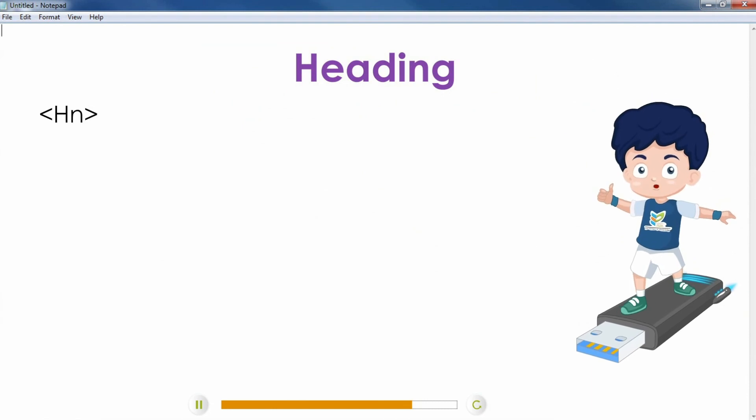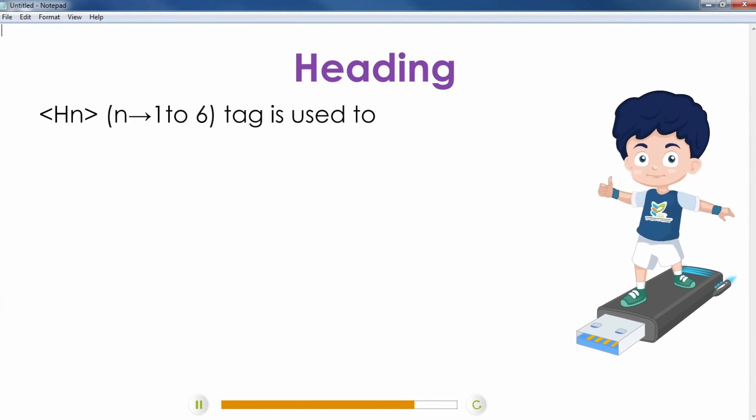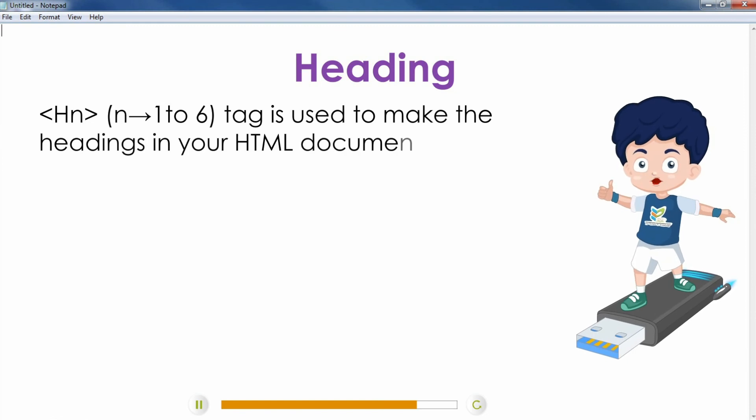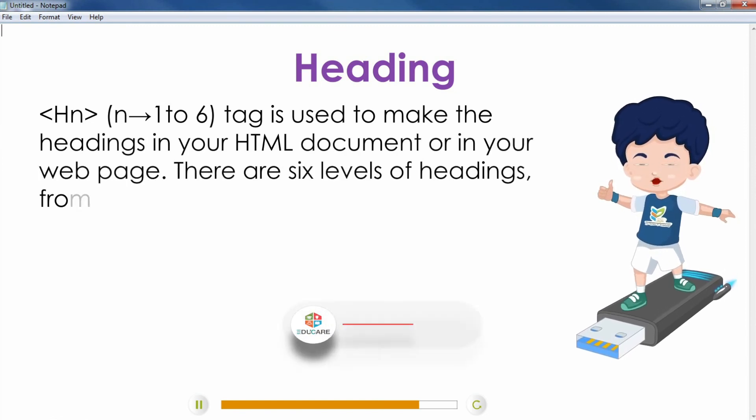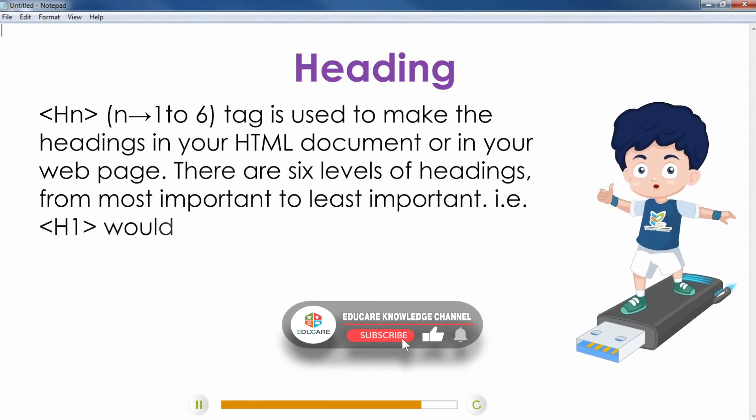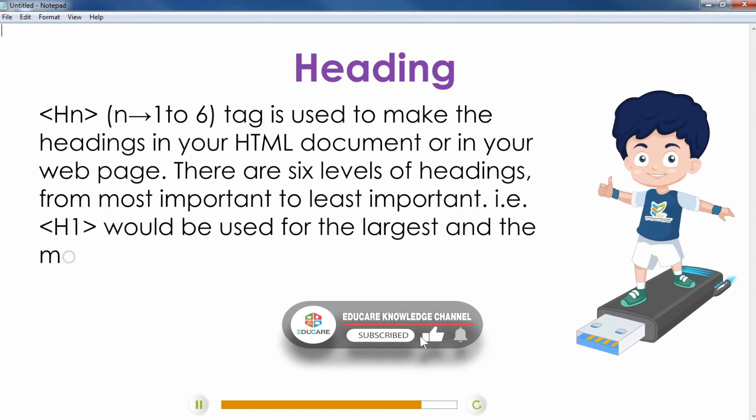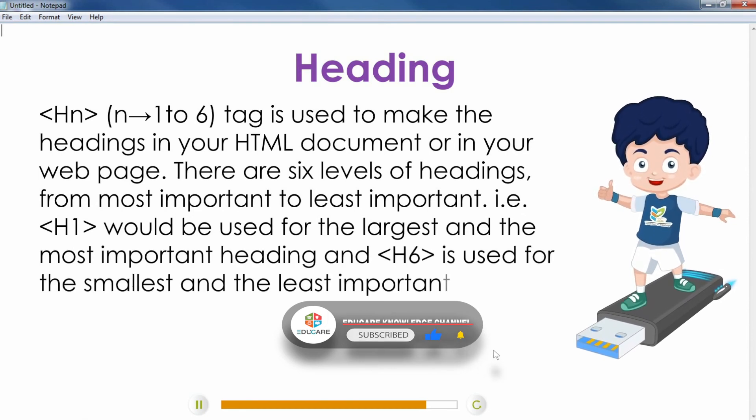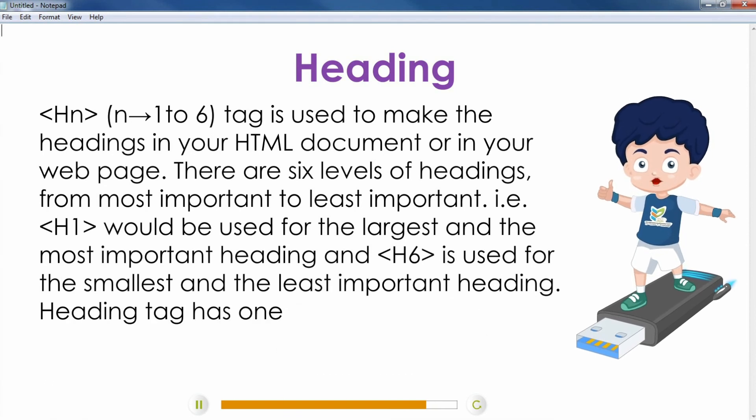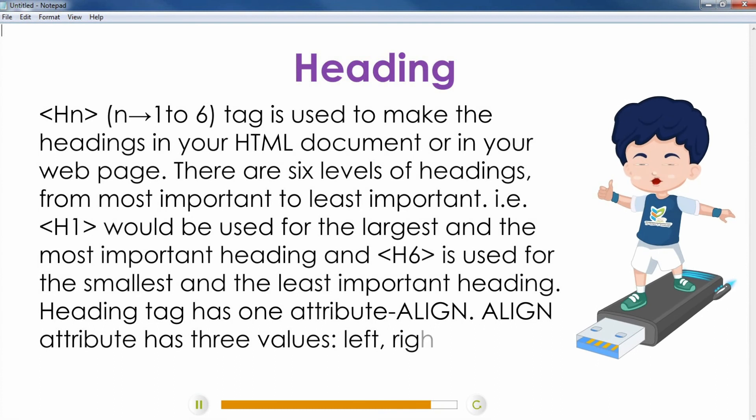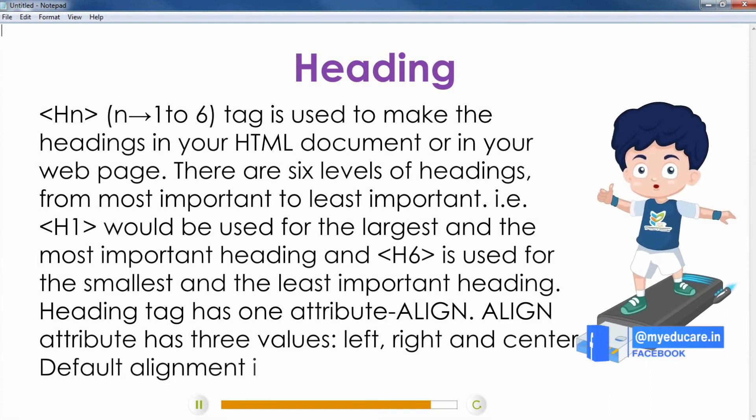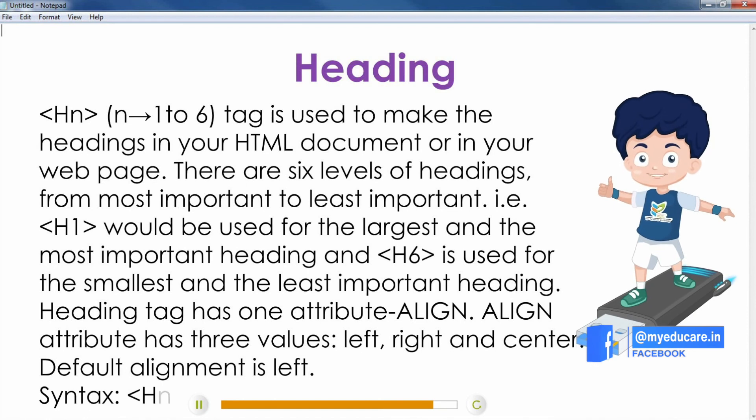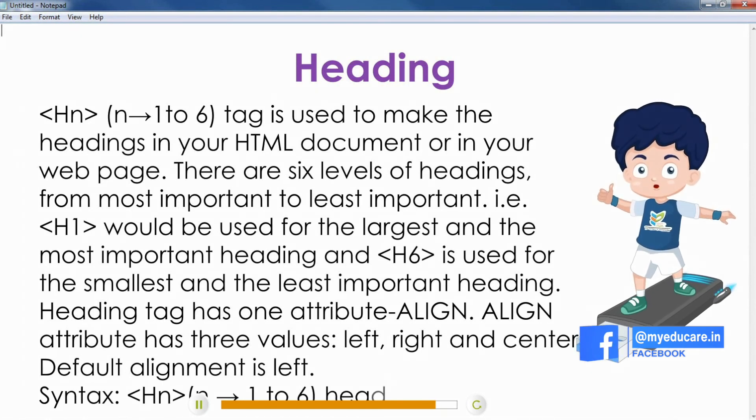Heading: Hn (n equals 1 to 6) tag is used to make the headings in your HTML document or web page. There are 6 levels of headings from most to least important. H1 would be used for the largest and most important heading, and H6 is used for the smallest and least important heading. Heading tag has one attribute: align. Align attribute has 3 values: left, right and center. Default alignment is left. Syntax: Hn (n equals 1 to 6), heading, slash Hn.